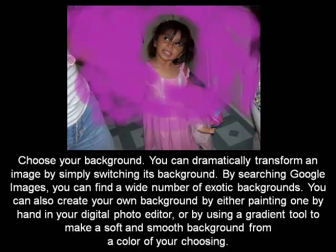Step 3: Choose your background. You can dramatically transform an image by simply switching its background. By searching Google Images, you can find a wide number of exotic backgrounds. You can also create your own background by either painting one by hand in your digital photo editor, or by using a gradient tool to make a soft and smooth background from a color of your choosing.